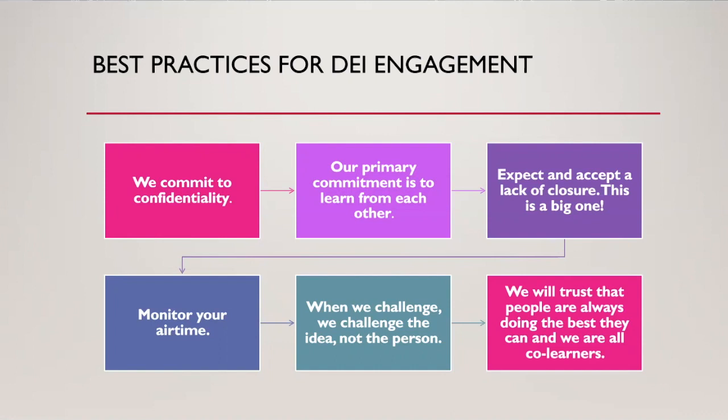Let's begin. First, we commit to confidentiality. What is learned in a DEI training can leave, but what is shared in the safe space needs to stay there. This helps to maintain privacy and solidify a brave space where people can honestly engage. Next, our primary commitment is to learn from each other. In a DEI discussion, all participants are encouraged to listen to one another and not talk at each other — to raise awareness and understanding of differences and similarities.